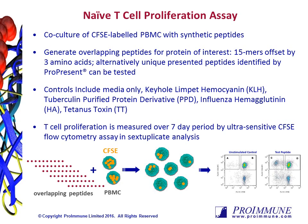The turnaround time for the naive T-cell proliferation assay is about nine weeks in total, including six weeks for synthesis of high-purity peptides and three weeks for the T-cell assay. At the conclusion of the study, we will upload the report to our secure server and host a debrief to go over the data and answer any questions.